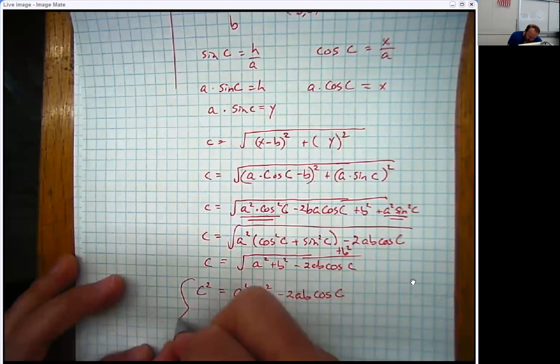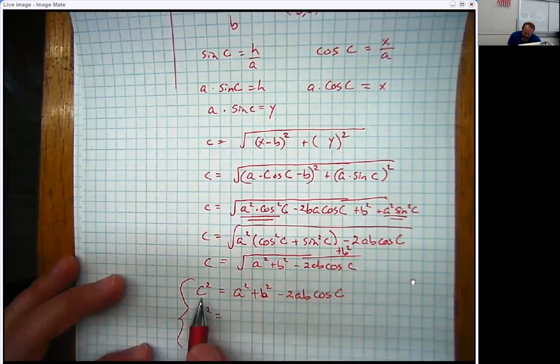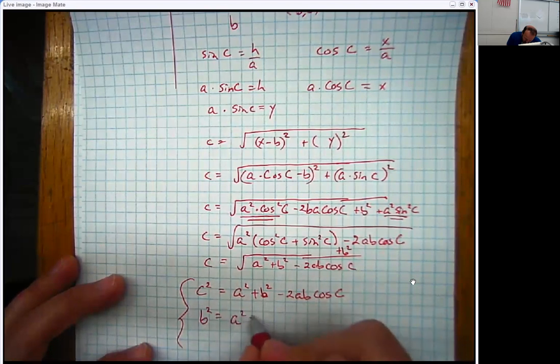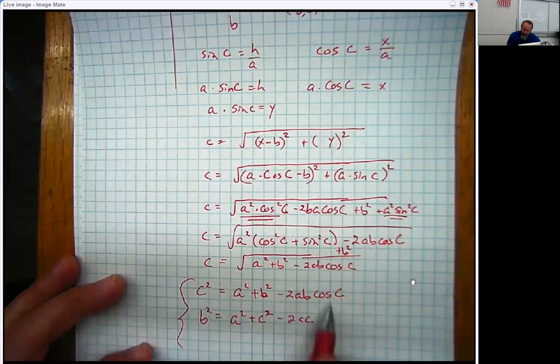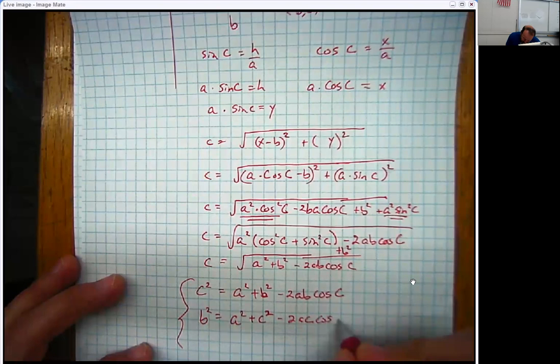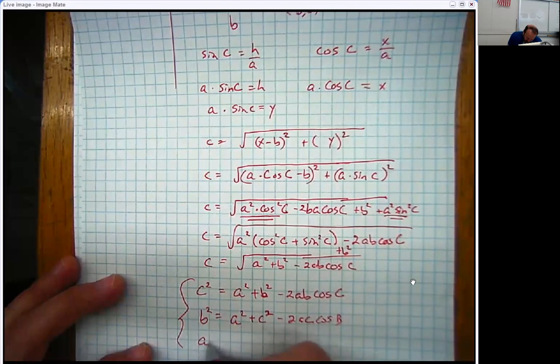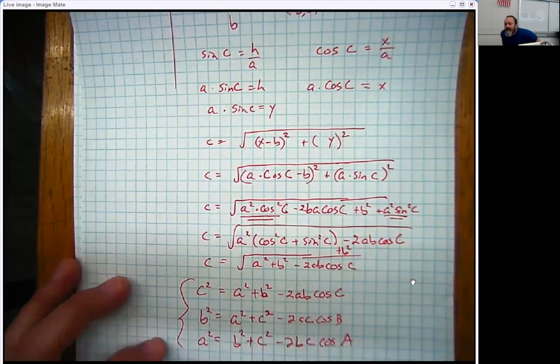And using a very, very similar argument, you could also say that not only is c squared, a squared plus b squared minus 2ab cosine C, then b squared would be a squared plus c squared. You would just kind of swap out and move things around. This would be, see the a b here minus two a c. And notice the angle c here goes with side c here. So this would be the cosine of b. And the third rendition would be a squared is b squared plus c squared minus two b c cosine of this time angle a.